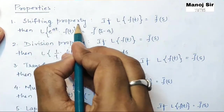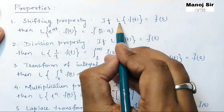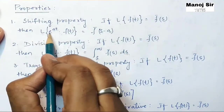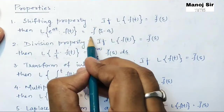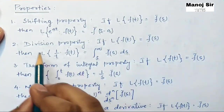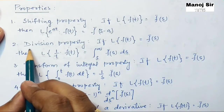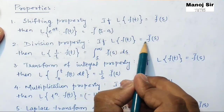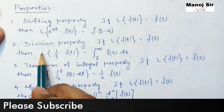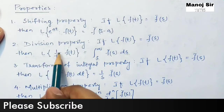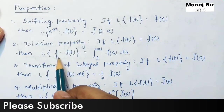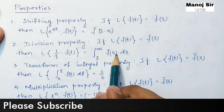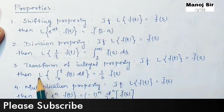The first property: if Laplace transform of f(t) equals f-bar of s, then Laplace transform of e to the power at into f(t) equals f-bar of s minus a. The second property is the division property: if Laplace transform of f(t) equals f-bar of s, then Laplace transform of f(t) upon t equals integration from s to infinity of f-bar of s ds.